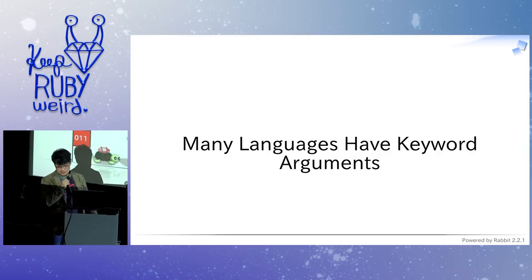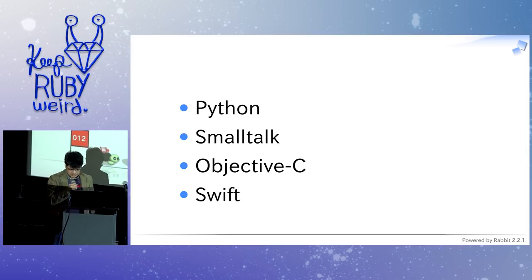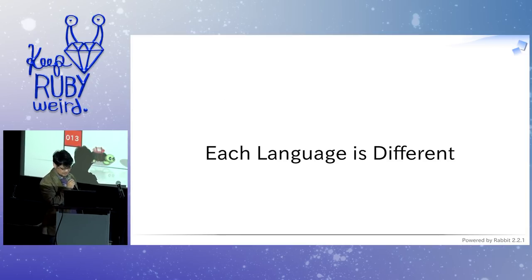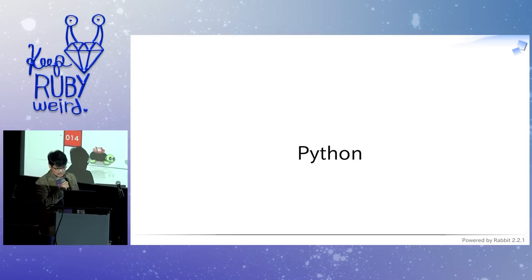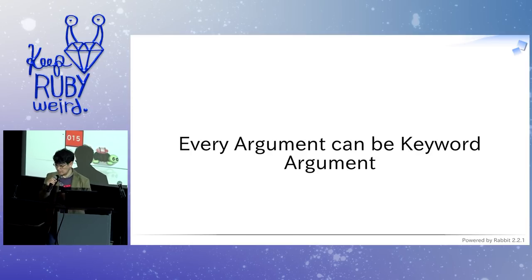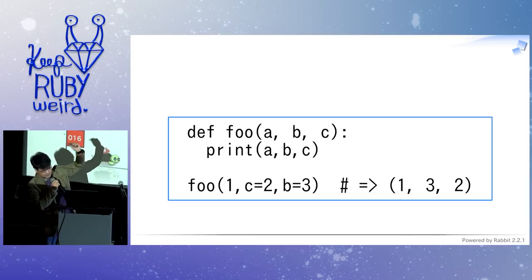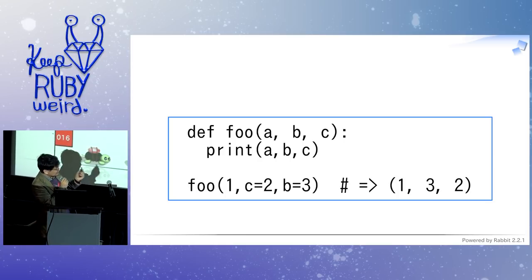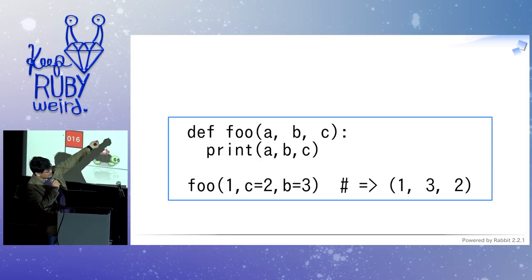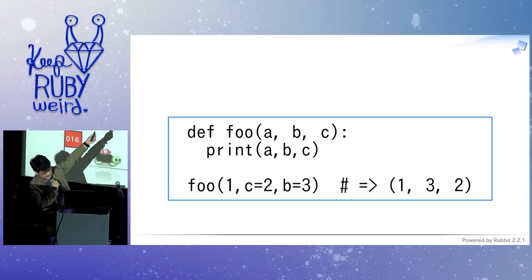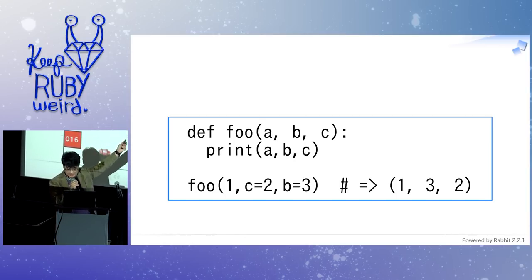Many other languages have keyword arguments as well. Python has keyword arguments, and Smalltalk has some sort of keyword arguments — Objective-C and Swift, for example. Each language is different. In Python, they don't provide a special kind of keyword argument; every argument can be a keyword argument. Like: def foo(a, b, c) — you can call that function providing the name of the argument, so you don't have to specify any keyword things in the method definition.